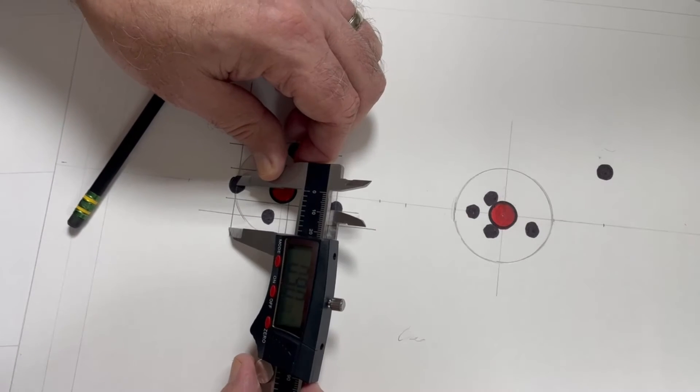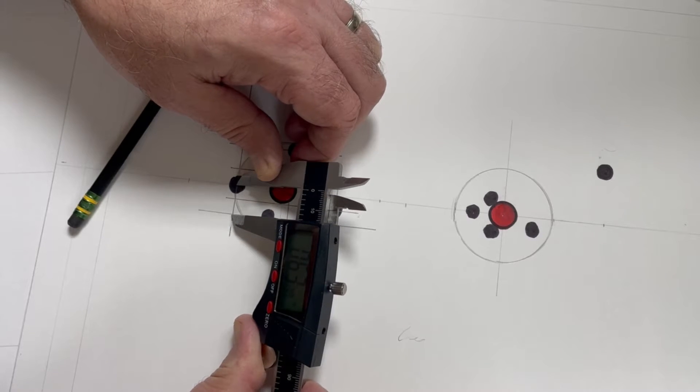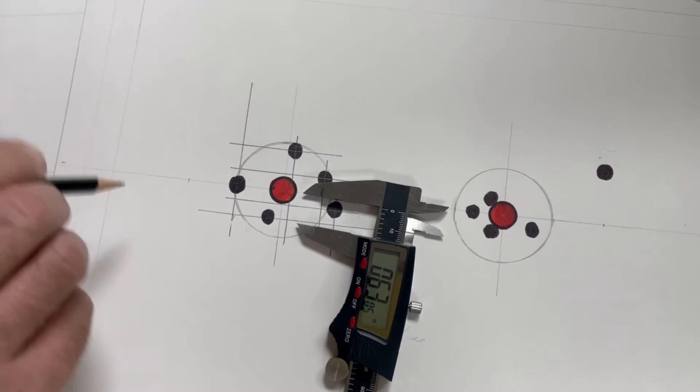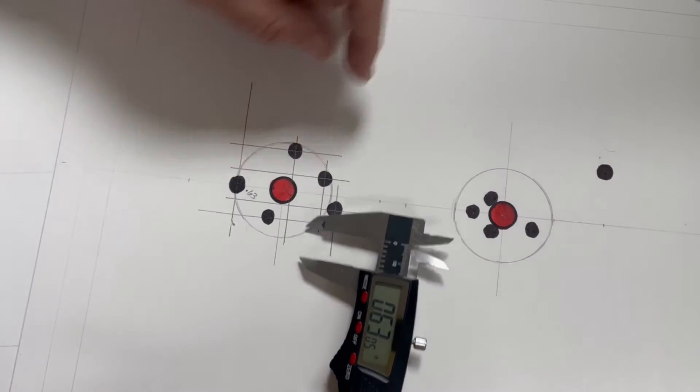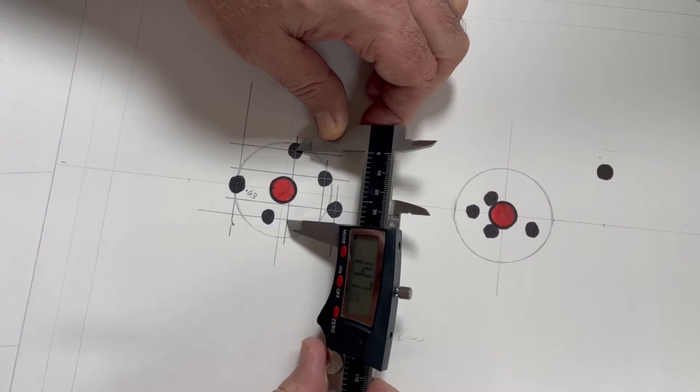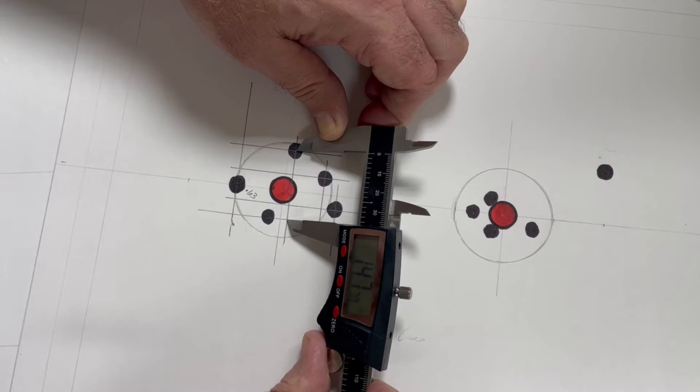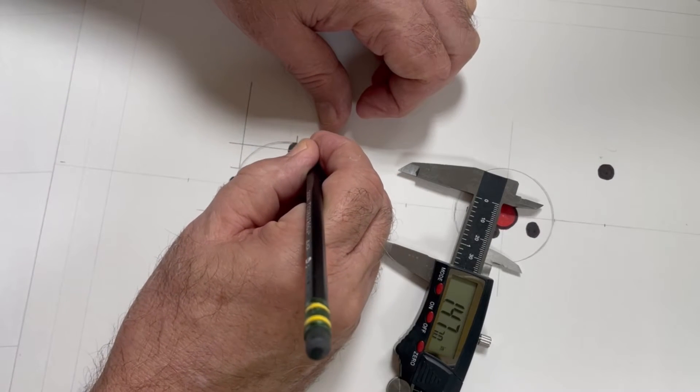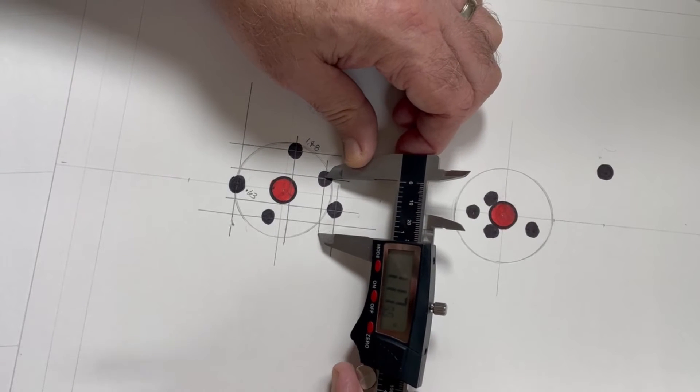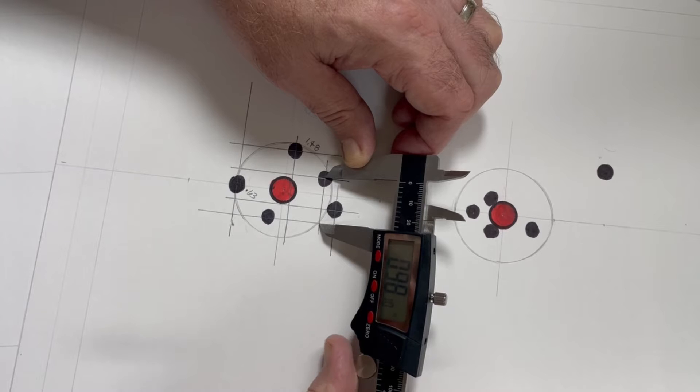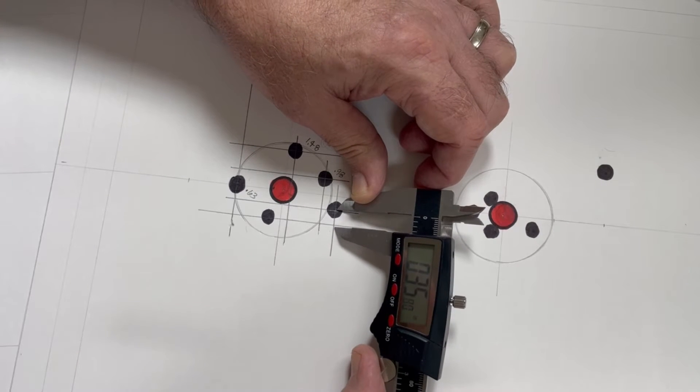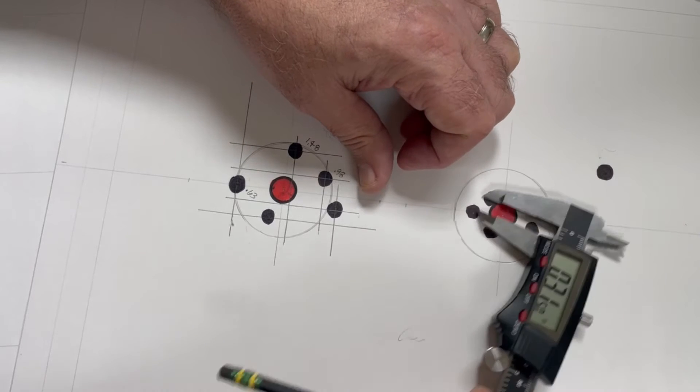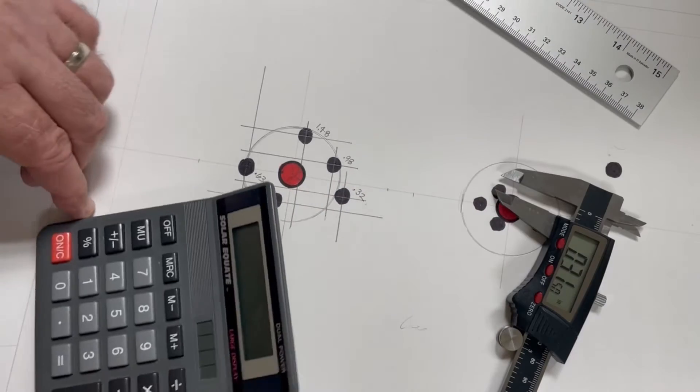So, horizontally, these are all done in random order. The first, second, and third really don't matter. This is 0.63. This is zero, so it doesn't get measured. We're going to round this to the nearest hundredth, so this is 1.48. This is 0.98. And this is 0.32.